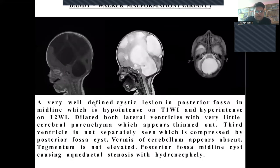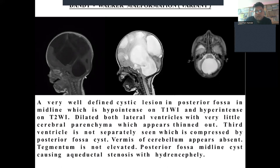In this case, a well-defined cystic lesion is noted in the posterior fossa in the midline, which is hypointense on T1 and hyperintense on T2. Dilated lateral ventricles with very little, thinned cerebral parenchyma are noted. The third ventricle is not visualized and is compressed by the posterior fossa cyst. The vermis of the cerebellum is absent and the tegmentum is not elevated. The final diagnosis is a posterior fossa midline cyst causing aqueductal stenosis with hydrocephalus, consistent with a Dandy-Walker malformation variant.